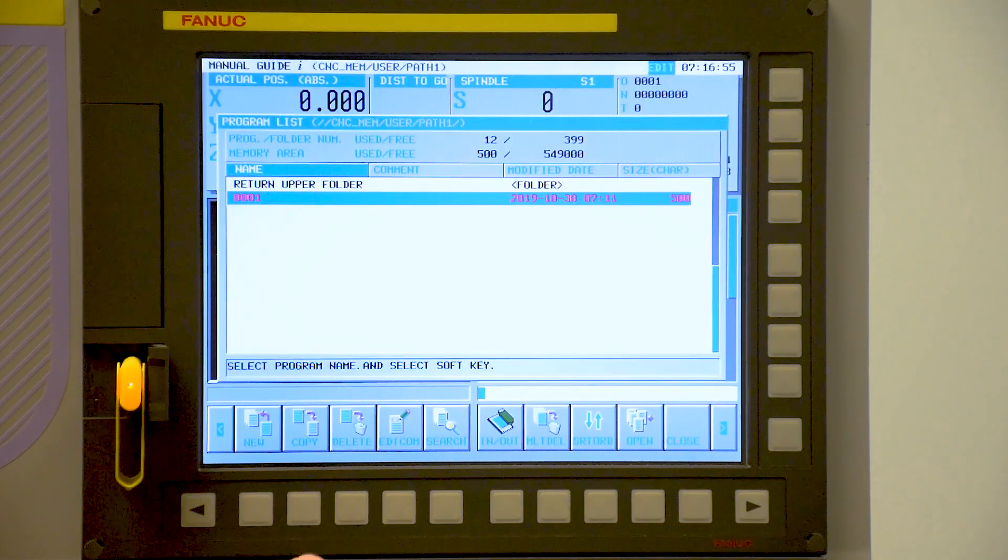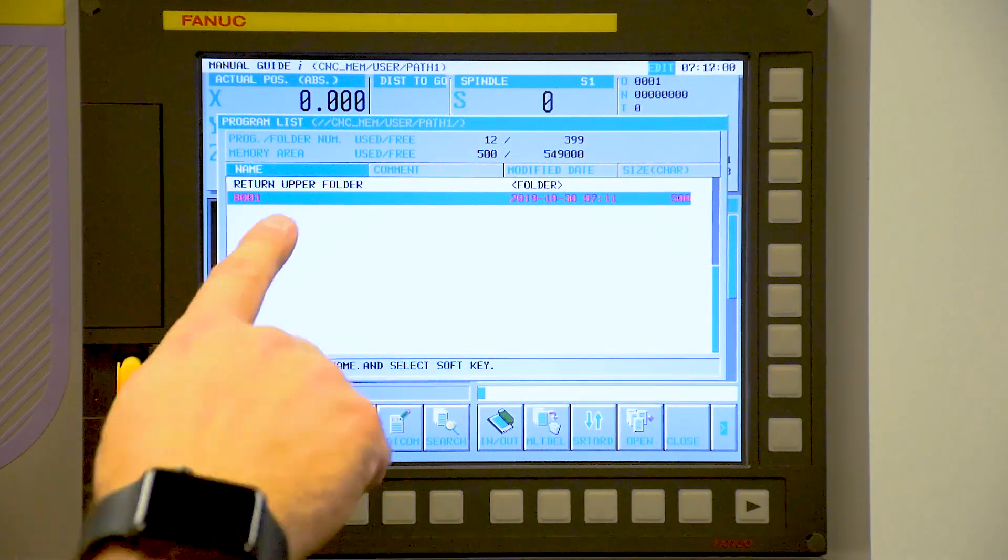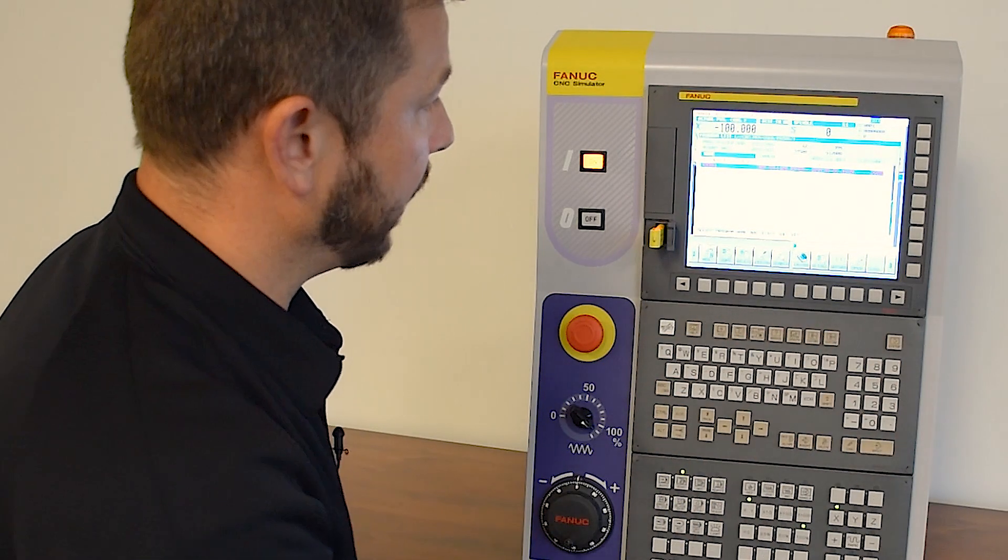If we press O list, it's going to list our part programs. At the moment we're in this CNC memory user path one and we already have program one in there, we just loaded that in there.